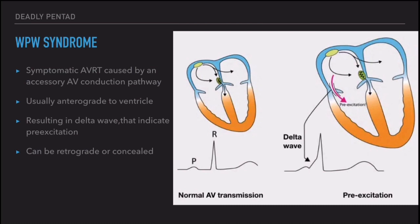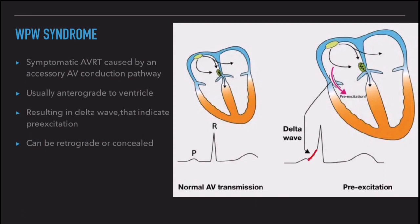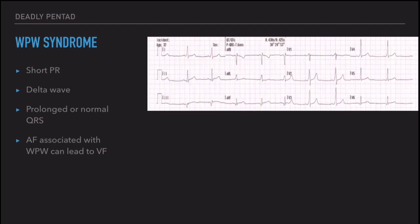Through the accessory pathway there is fast conduction, which can result in early ventricular depolarization and a delta wave — the early positive wave seen in the initial part of the QRS complex. This also widens the QRS complex. The ECG findings of WPW syndrome are: a short PR interval less than 120 ms (because there is no AV delay through the accessory pathway), a delta wave (the initial positive deflection due to early ventricular depolarization), and a widened QRS complex.